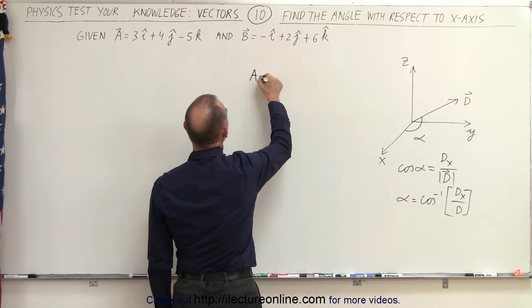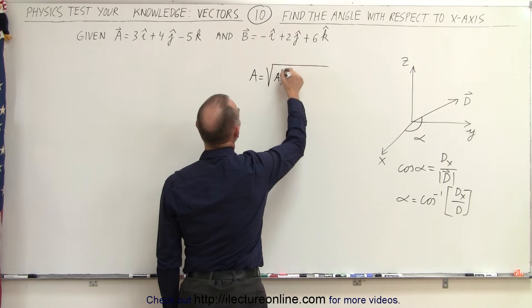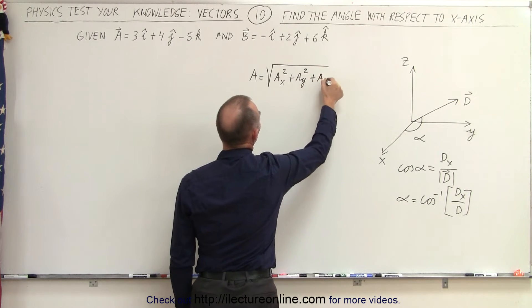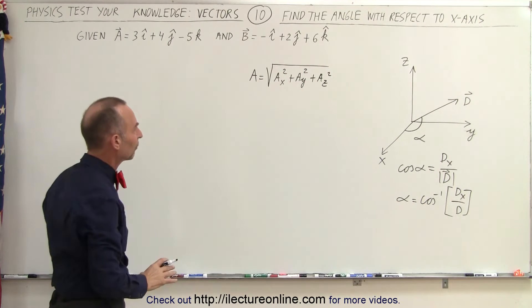So the magnitude of a is going to be equal to the square root of the individual components squared: a sub x squared plus a sub y squared plus a sub z squared, add them all up, take the square root that gives us the magnitude of the vector.